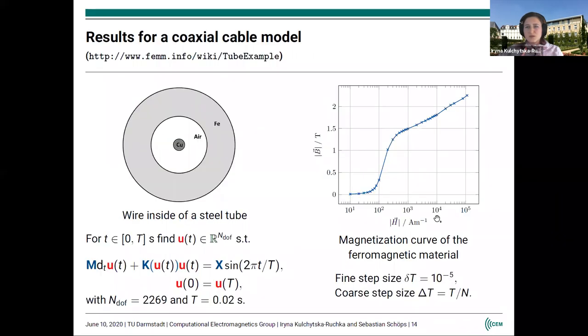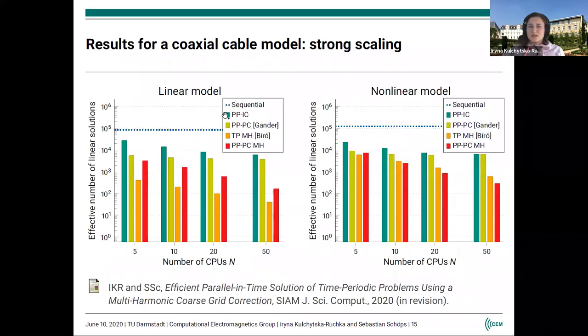Now, we consider the approaches that I just mentioned, all of them, applied to an eddy current problem for a coaxial cable model. This is basically a wire inside of a steel tube. It is a non-linear model. The non-linearity is given by the magnetization curve, which shows the dependence of the magnetic flux density on the magnetic field intensity. This model is rather small; it has a bit more than 2,000 degrees of freedom. We considered two cases: this non-linear model with the non-linearity I just talked about, and also a linear example where the relativity was a linear function.